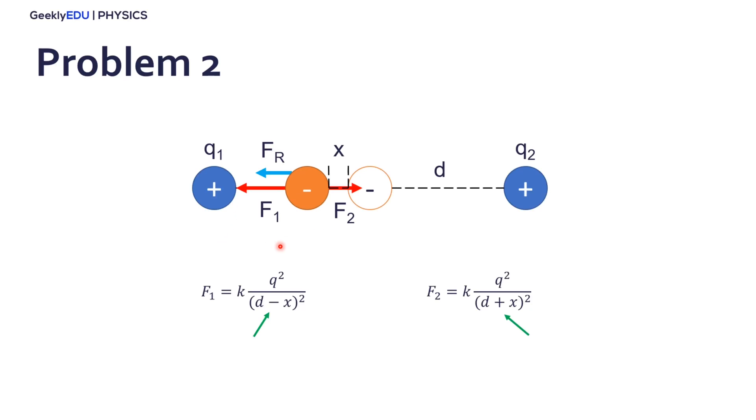So for force number one, because the particle is closer to it, force number one is greater than force number two, that's further away from the particle. So F1 is much greater than F2. And now we have a resultant force pointing to the left, and every time this particle moves to the left, greater is force number one, and weaker is force number two.